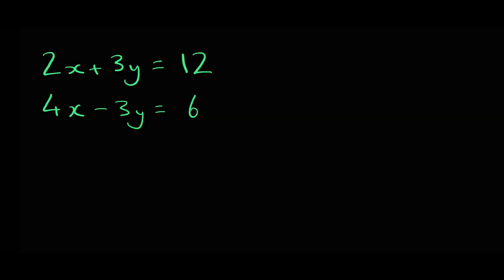Here we have 2x plus 3y equals 12 and 4x minus 3y equals 6. So how can we figure out what x and y are? Using the elimination method, you add the equations together or subtract one from the other in order to eliminate one of the variables so you can solve for the other. Here we have 3y and negative 3y, so if you add the two equations together they cancel each other out.